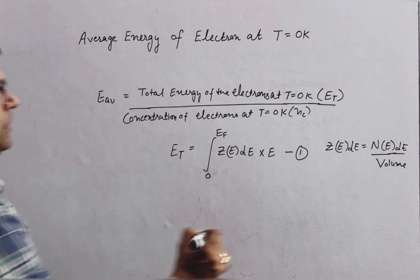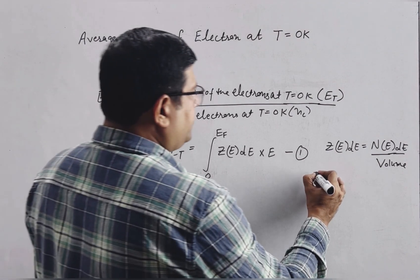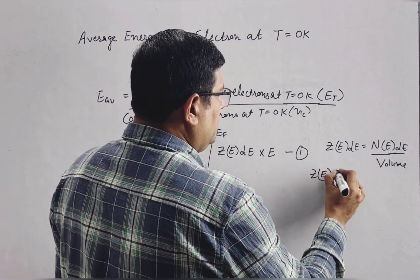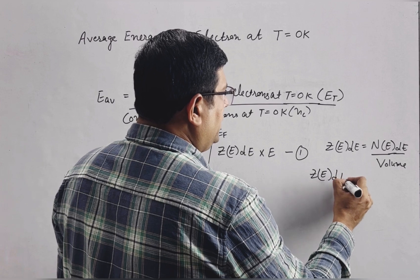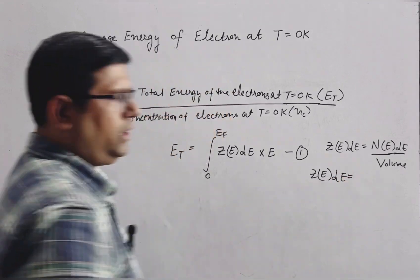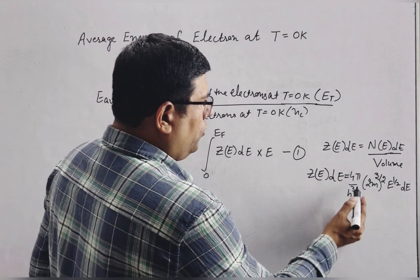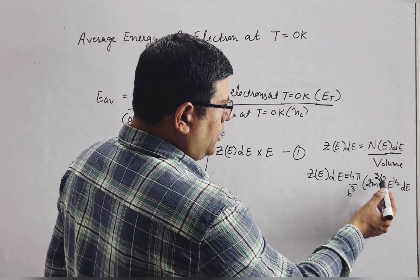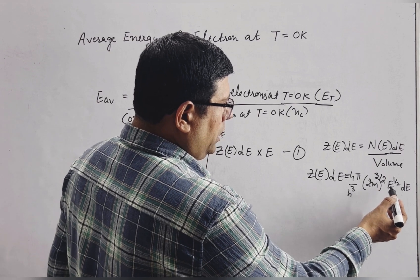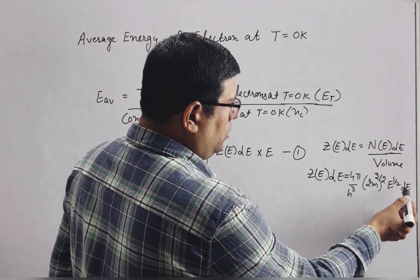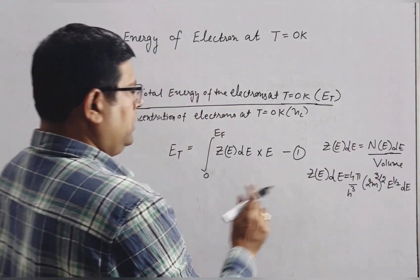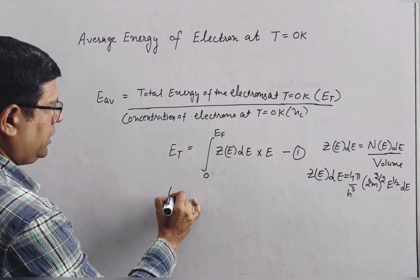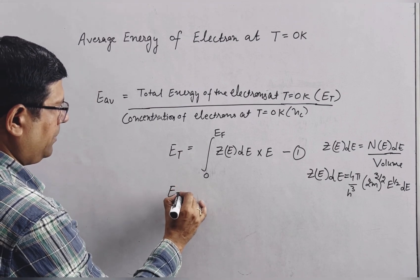Now we know the density of states Z(E) dE has the value: 4π by h-cube, into 2m raised to power 3 by 2, into E raised to power 1 by 2, dE. We will put this value into the equation for ET.